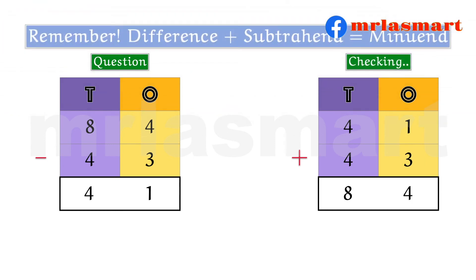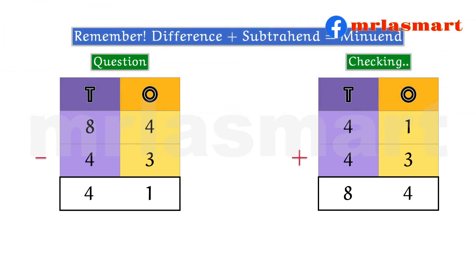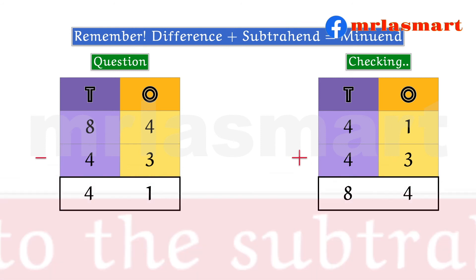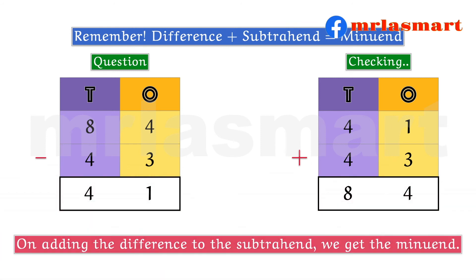Remember, difference plus subtrahend equals minuend. On adding the difference to the subtrahend, we get the minuend.